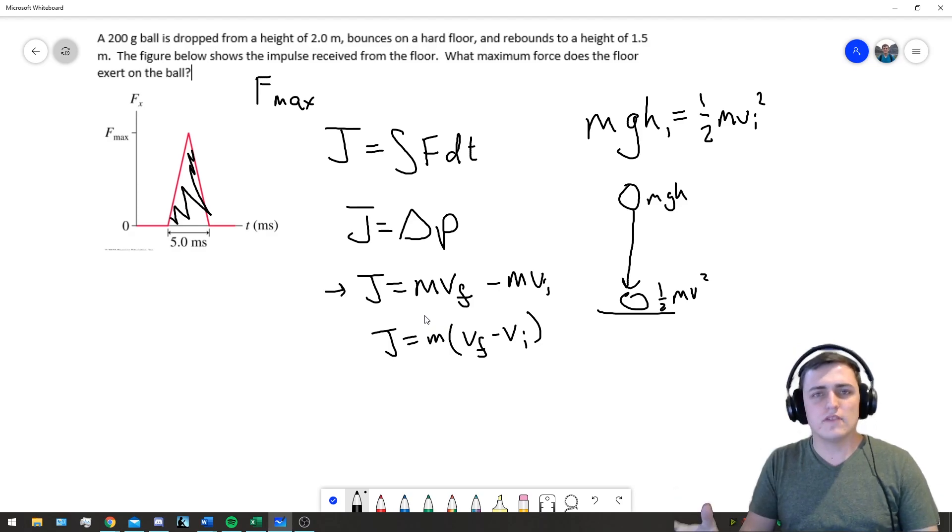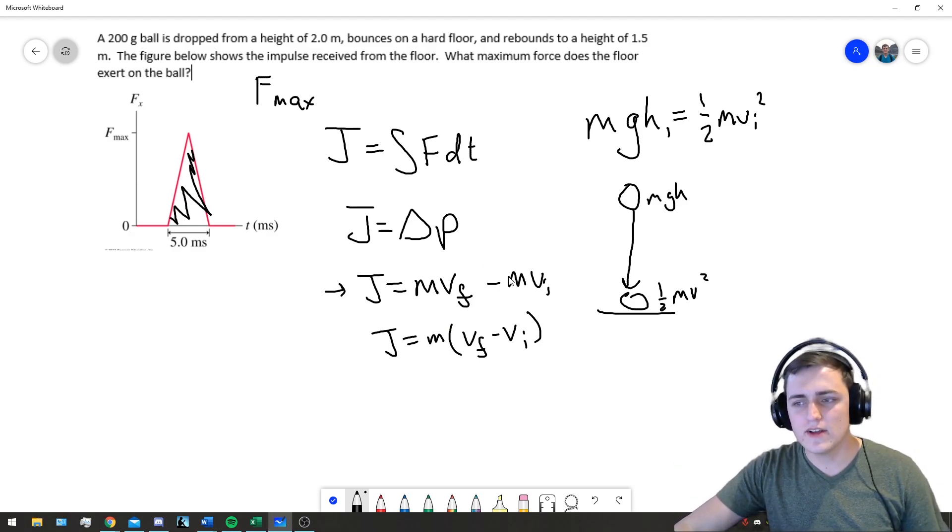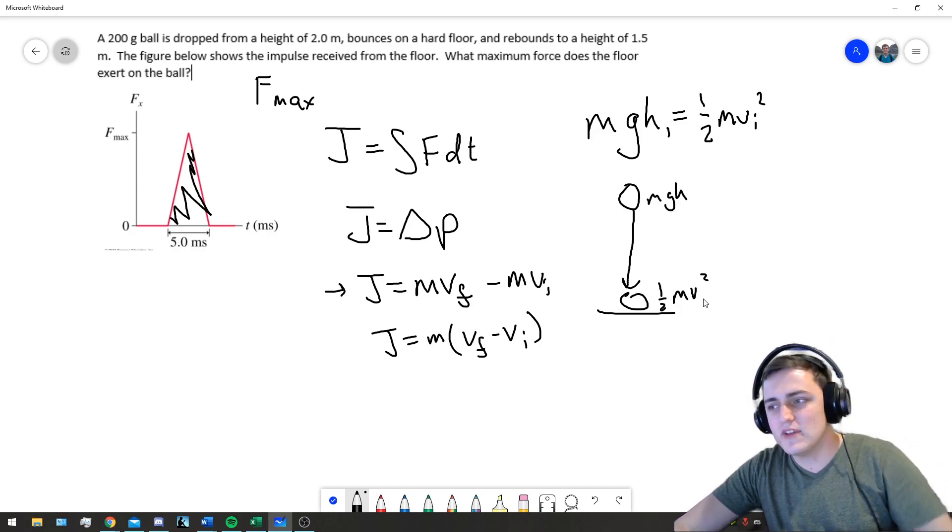We are looking solely at the initial to final of the collision. That's what our impulse is defined as, and so our initial is the speed we hit the ground at.